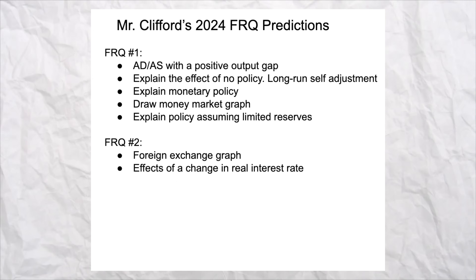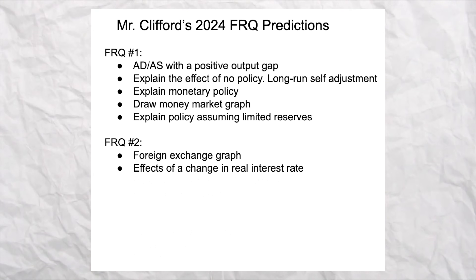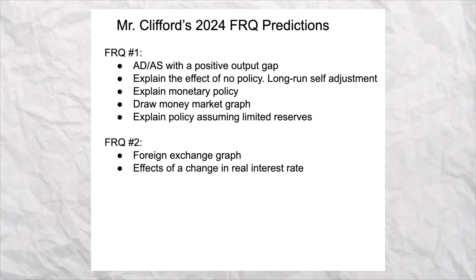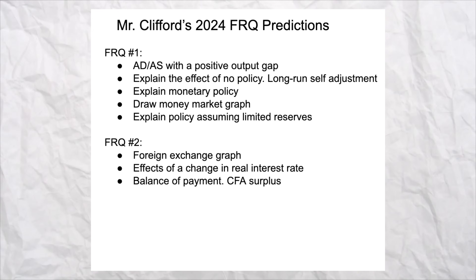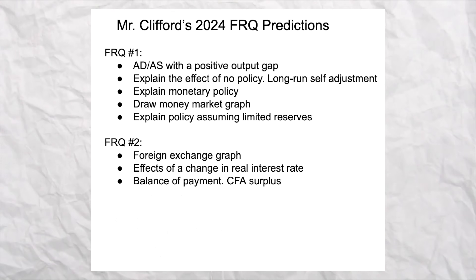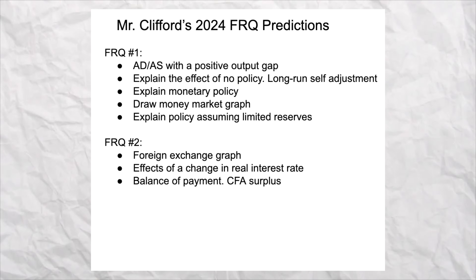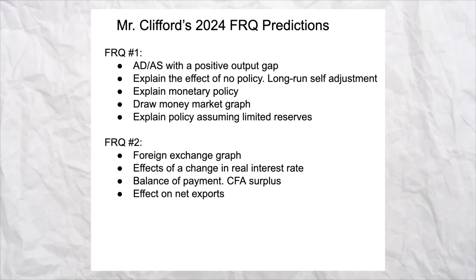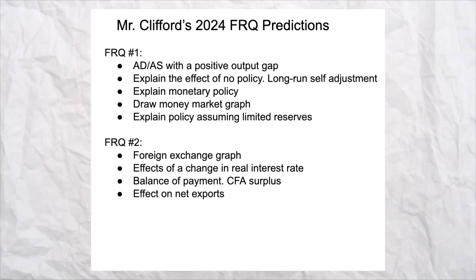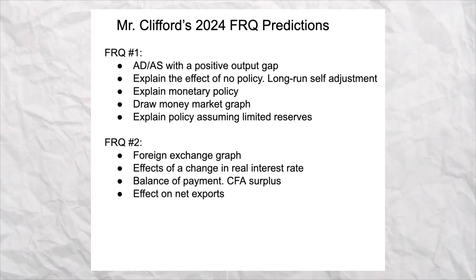Free response number two is going to focus on foreign exchange — drawing the graph and explaining what happens when there's a change in real interest rate on the graph you drew. Then they're going to ask about the balance of payments and how a higher real interest rate would cause the capital and financial account to move towards a surplus. They'll finish by asking: if the currency appreciates, how does that affect net exports? The answer is it would decrease — if the currency appreciates, other countries are going to buy less of your stuff.